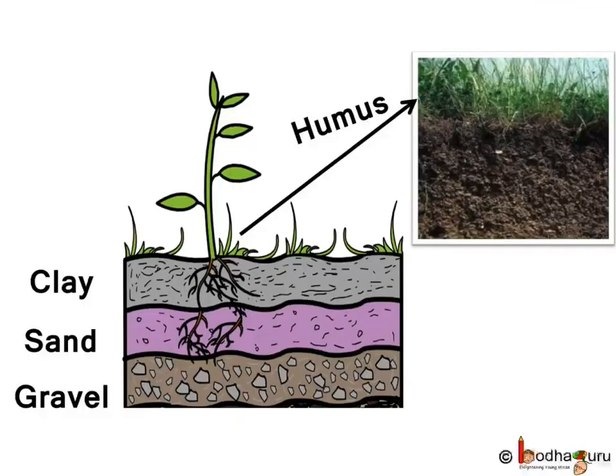We know that soil has organic matter, minerals, pebbles, sand etc. The composition and their proportion decide the color, structure and porosity of soil. And all these properties regulate the movement of water and air in the soil, which are very crucial for growth of plants.